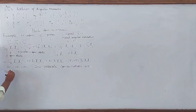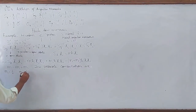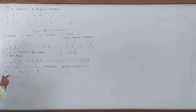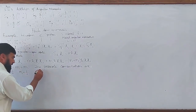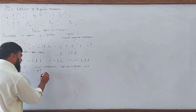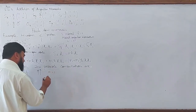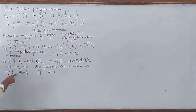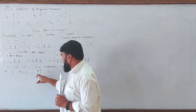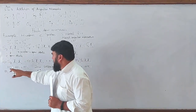The possible combinations are: if M1 = +1/2 and M2 = +1/2, then the total M = 1. Both particles spin-up gives a total M of one.